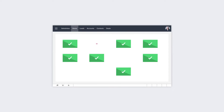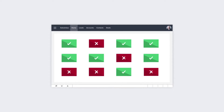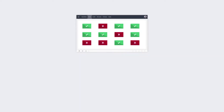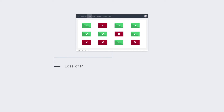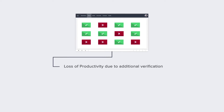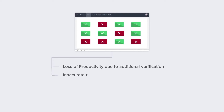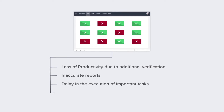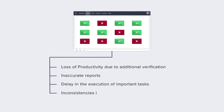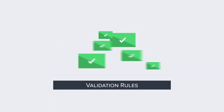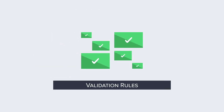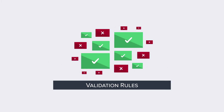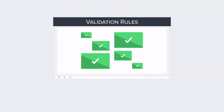In any organization, data discrepancy in the CRM system can cause a series of problems such as loss of productivity due to additional tasks of verifying the data manually, inaccurate reports, delay in the execution of important tasks, and inconsistencies in activities. Validation rules help in keeping your CRM data clean by blocking the incompatible and irrelevant data before it can enter the CRM.